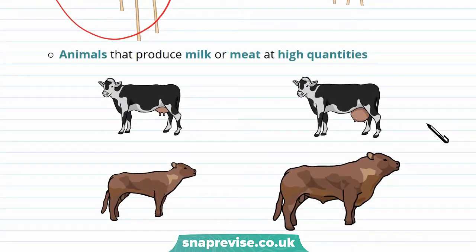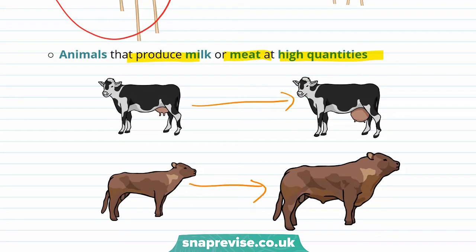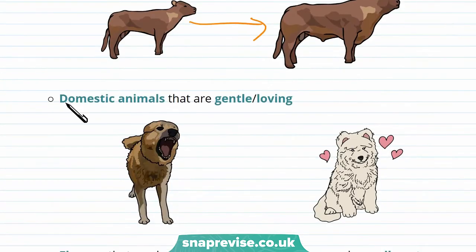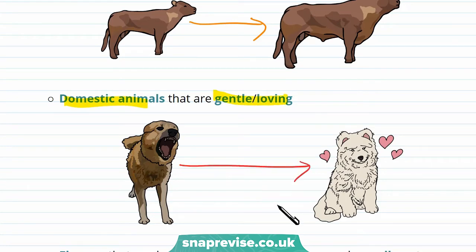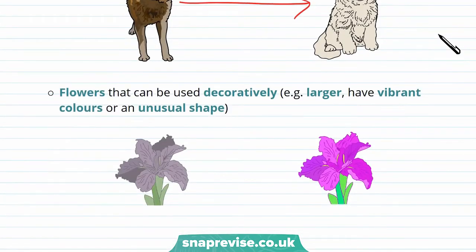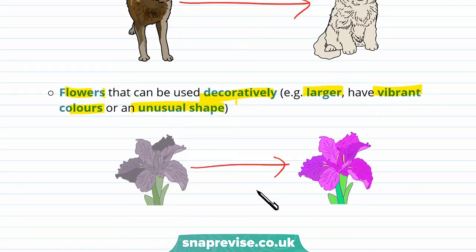You can also make animals that produce milk or meat at high quantities, which increases food production. You can also make domestic animals that are gentle or loving by breeding only those with a gentle temperament — this is what happened in the domestication of dogs. You can also breed flowers that can be used decoratively; for example, they may be larger, have vibrant colours, or an unusual shape. For example, you can selectively breed orchids to be bright and more colourful.